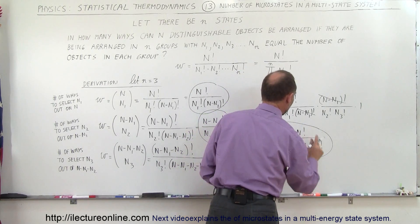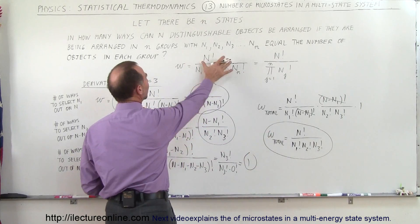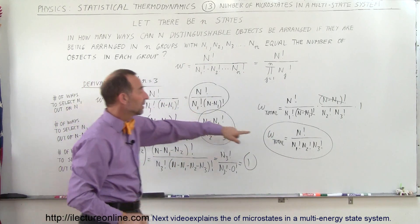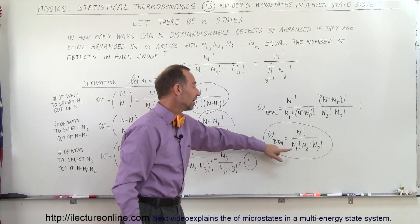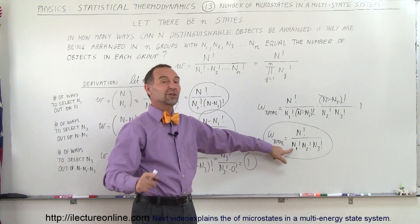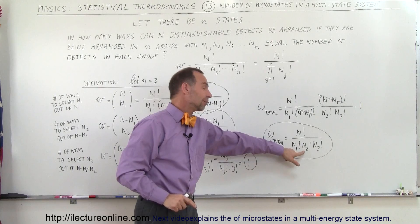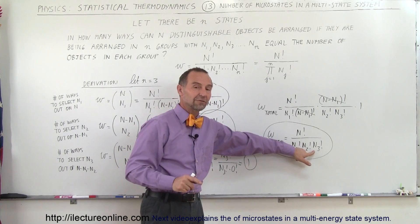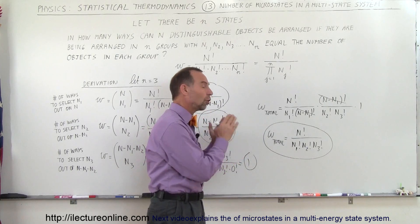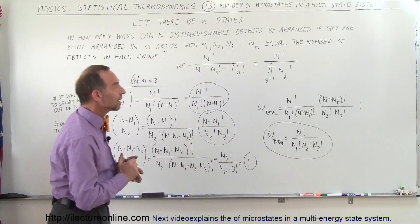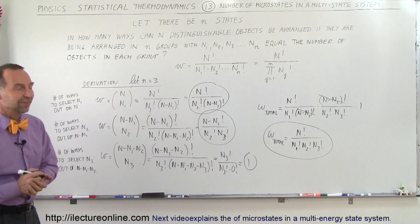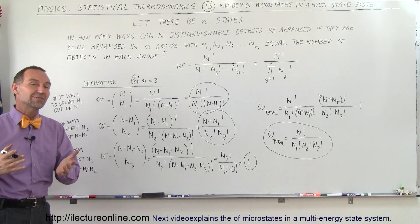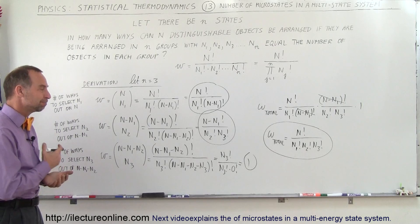You can see that this takes on the general format introduced earlier: to find the total number of microstates, take the total number of objects factorial and divide by the number of objects in each state factorial — state 1, state 2, state 3 — multiplied together. That gives all the microstates in a three-state system. And that's how we handle a multi-state system with more than two states.